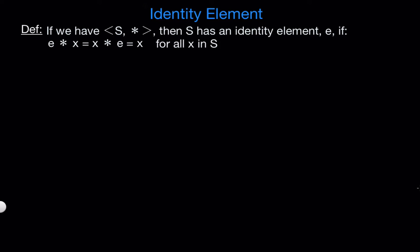Hi, in this video I want to talk about the identity element. So let's start with the definition. If we have a structure S with the binary operation star, then S has an identity element which we'll call e if e star x equals x star e which equals x for all x in S.